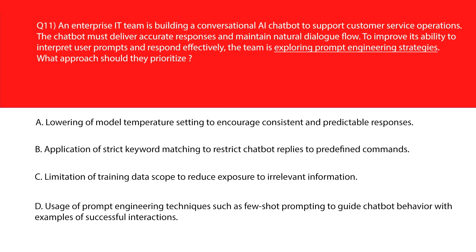Now let's look at this question. Option A — if we look, C is lowering of model temperature settings to encourage consistent and predictable responses. Predictability improves consistency but doesn't enhance understanding of prompts, hence incorrect.